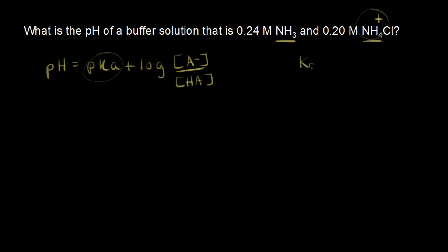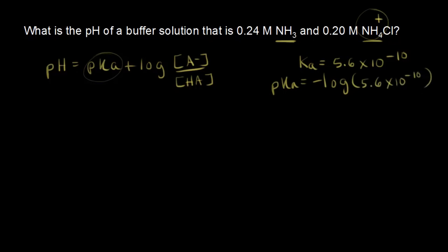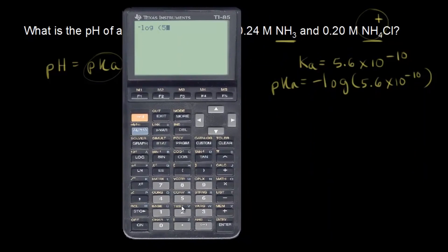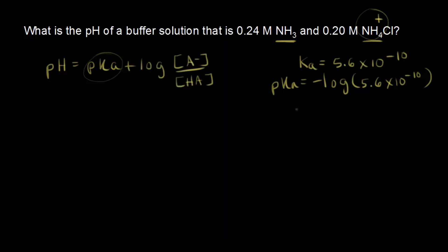Let's say we already know the Ka value for NH4+, and that's 5.6 times 10 to the negative 10. To find the pKa, all we have to do is take the negative log of that. So the pKa is the negative log of 5.6 times 10 to the negative 10. Let's get out the calculator and do that math — that gives us a pKa value of 9.25.